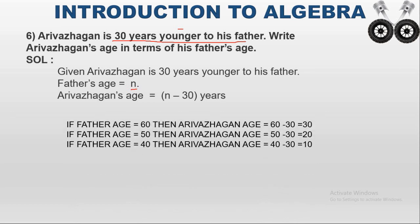Arivarakhan's age equals n minus 30. For example, if the father's age is 60, then Arivarakhan's age is 60 minus 30 equals 30. If the father's age is 50, Arivarakhan's age is 50 minus 30 equals 20. If the father's age is 40, Arivarakhan's age is 40 minus 30 equals 10. Depending on the situation, the father's age changes — that is why we use a variable.